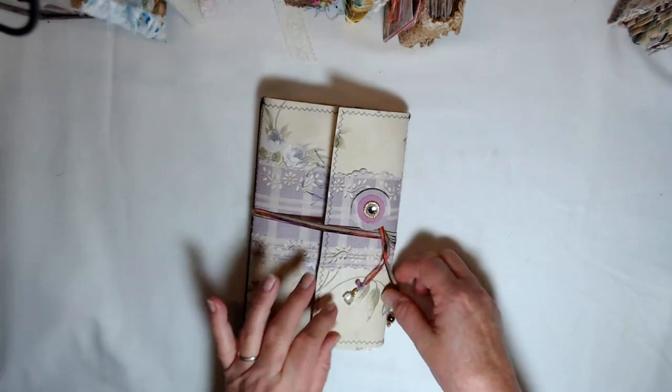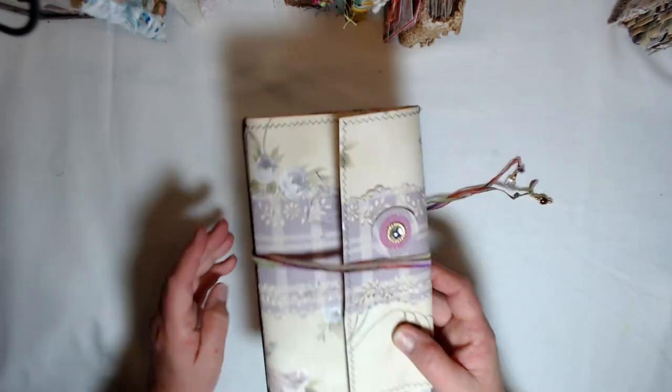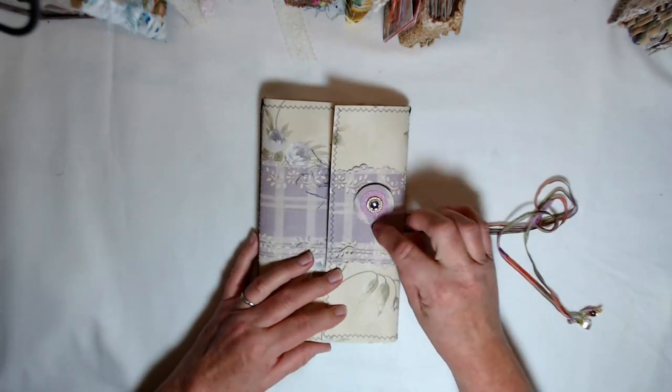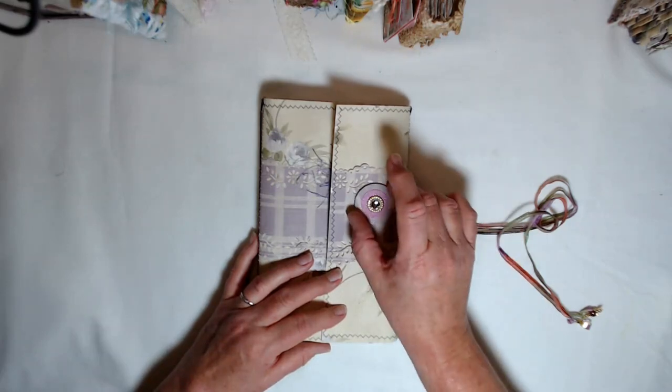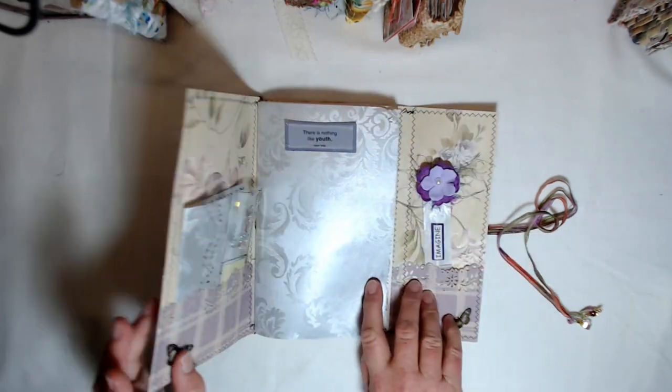It has little beaded dangles. I just took a brad here and added some more circles to it, reinforced it, and raised it up a little so I could wrap it around. This one opens like this.